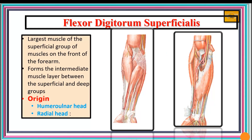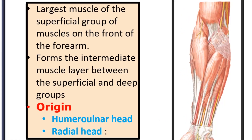We'll look at the biggest muscle of these five superficial flexors — a muscle noted to be on a slightly deeper plane compared to the rest — and that is flexor digitorum superficialis. It is the largest in this group, forms the intermediate layer, and has a large range of origin. It originates from the humerus, the ulna, and the radius, so its origin can be categorized as having a humeral-ulnar head and a radial head.